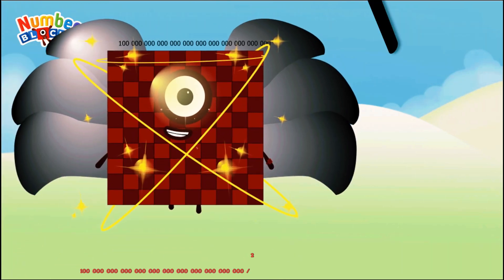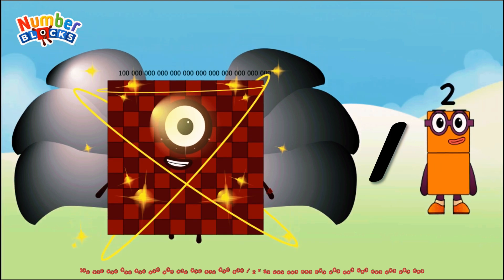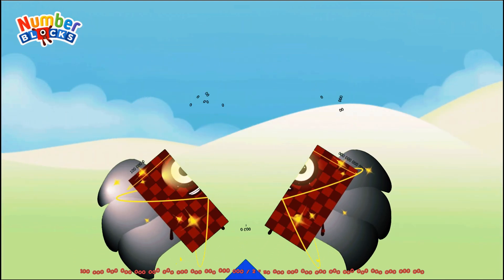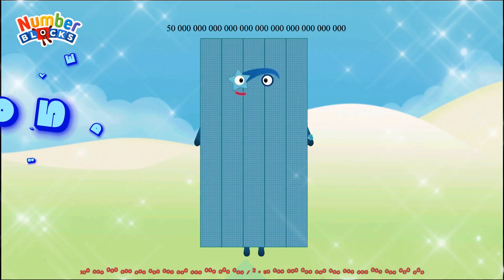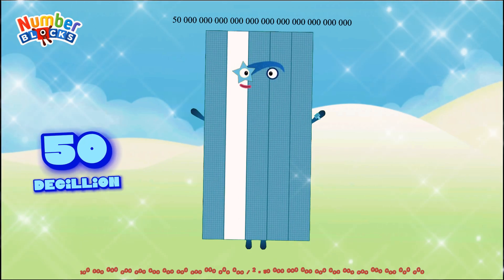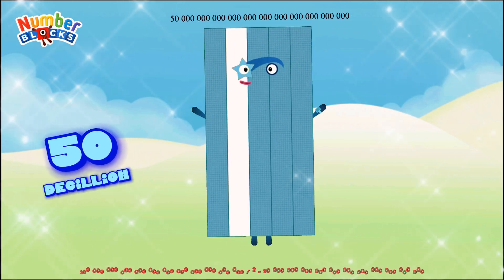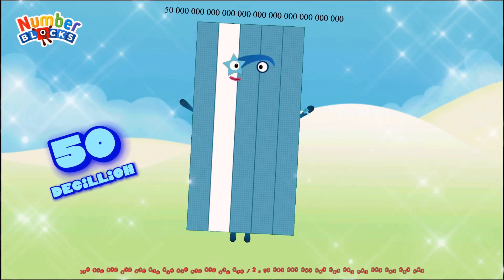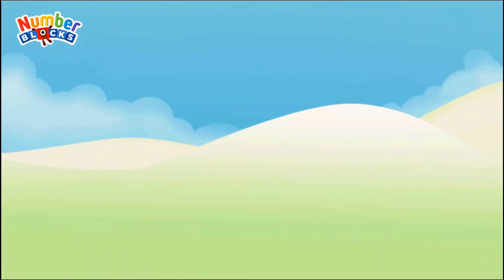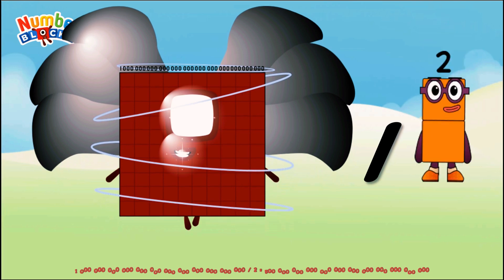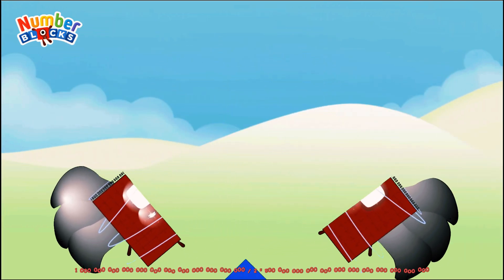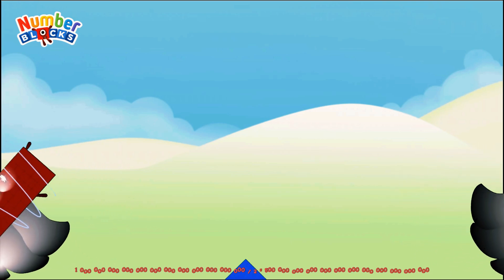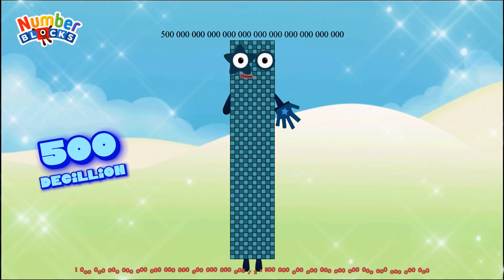One hundred decillion divided by two equals fifty decillion. One decillion divided by two equals five hundred nonillion.